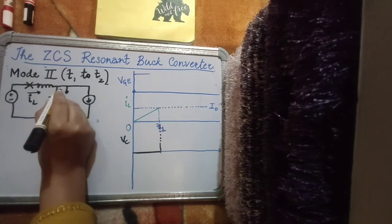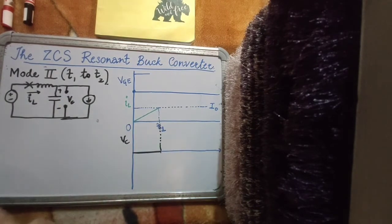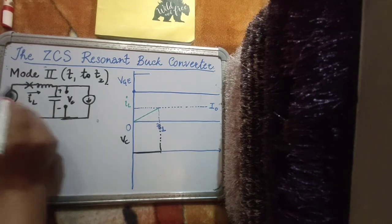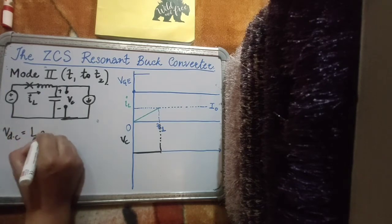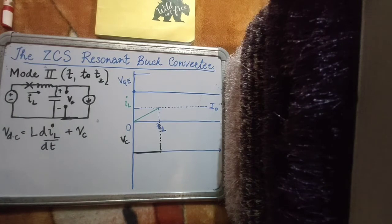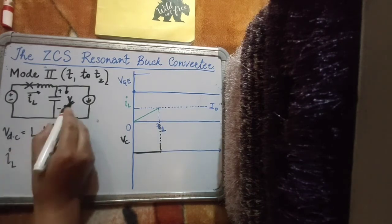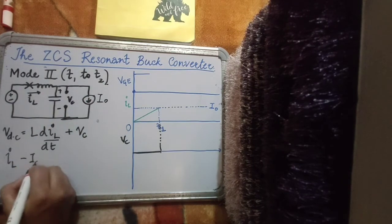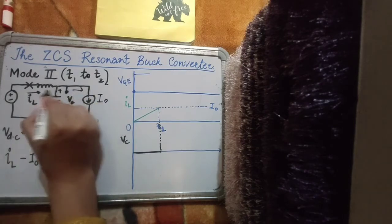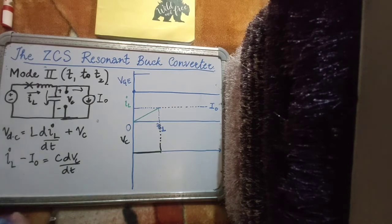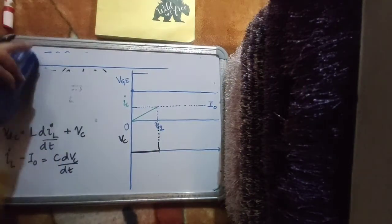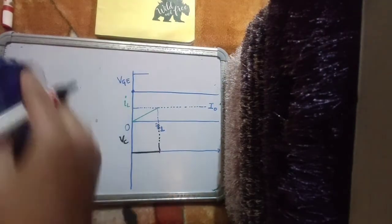During Mode 2 I have inductor current iL and capacitor voltage vC, giving two differential equations. From KVL: VDC = L·(diL/dt) + vC. From KCL: iL − I₀ = C·(dvC/dt), which is the capacitor current going into the capacitor. These are the first-order differential equations describing Mode 2.